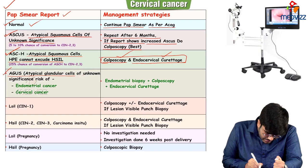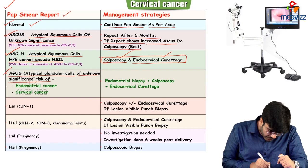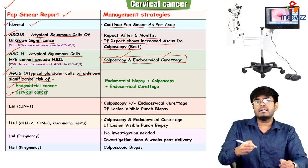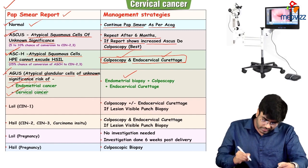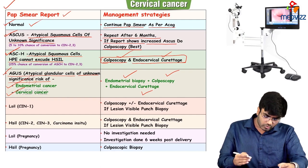This is the summary of Pap smear reports and different management strategies. Now let's see some important points about colposcopy. The colposcope is a magnification device that can magnify up to 20 to 30 times. You magnify the cervix and apply 5% acetic acid — if there are any dysplastic cells, that area will appear aceto-white.